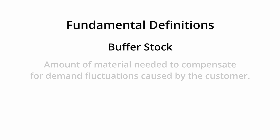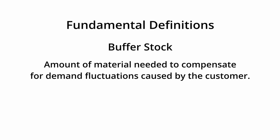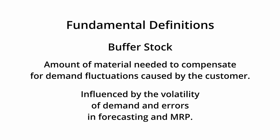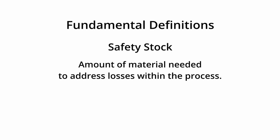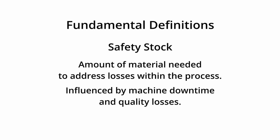Buffer stock: this is the amount of material needed to compensate for demand fluctuations caused by the customer. Buffer stock is influenced by the volatility of demand and errors in forecasting and MRP. Safety stock: this is the amount of material needed to address losses within the process, and is influenced by machine downtime and quality losses.